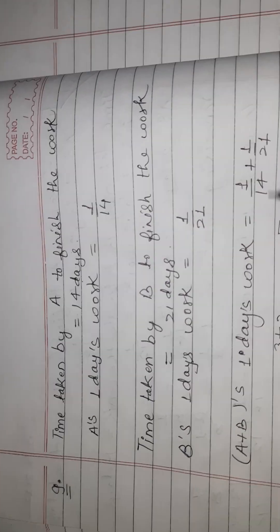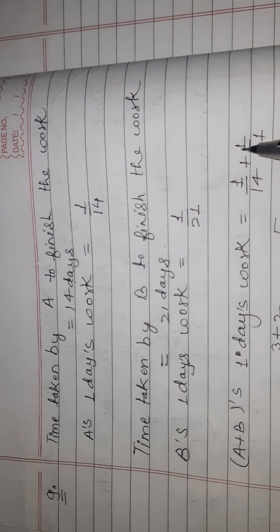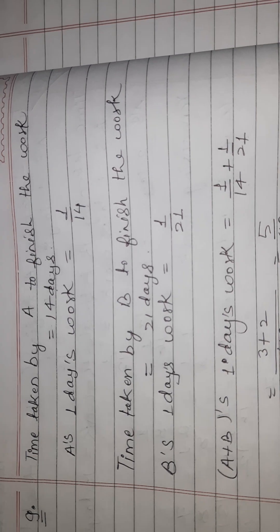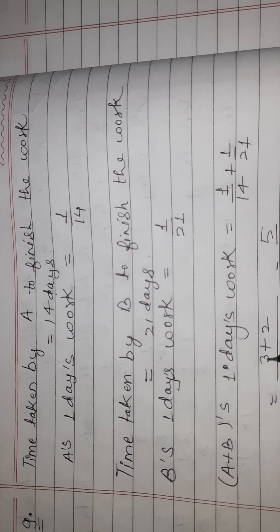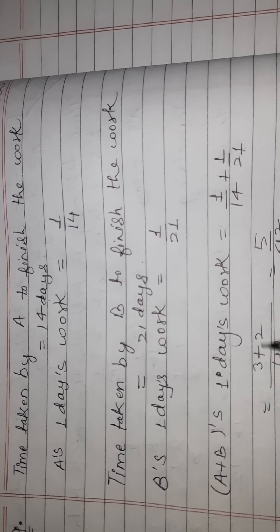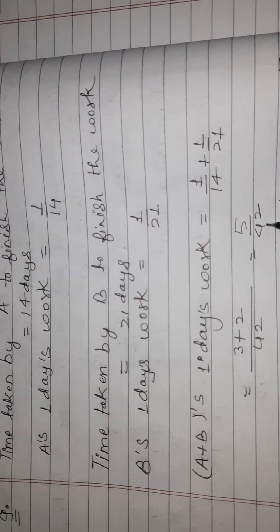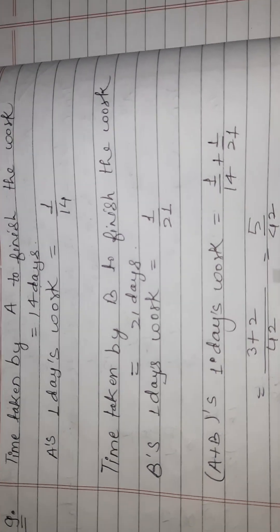We will add the work of 1 upon 14 plus 1 upon 21. The LCM of 14 and 21 is 42, so 3 plus 2 is equal to 5 upon 42. This is A plus B to do 1 day.